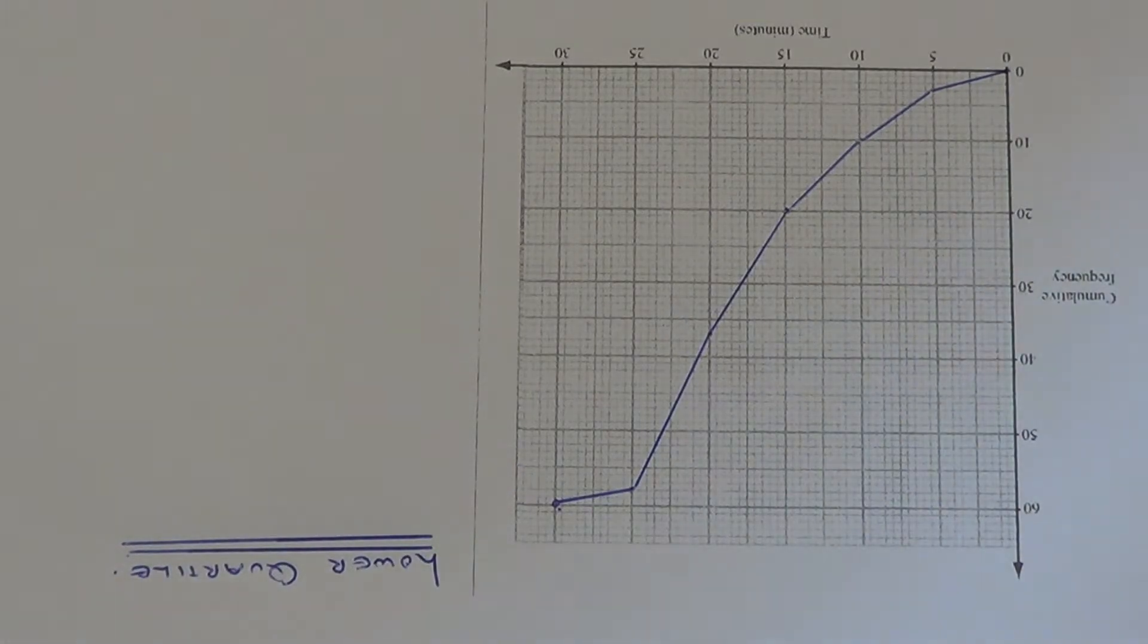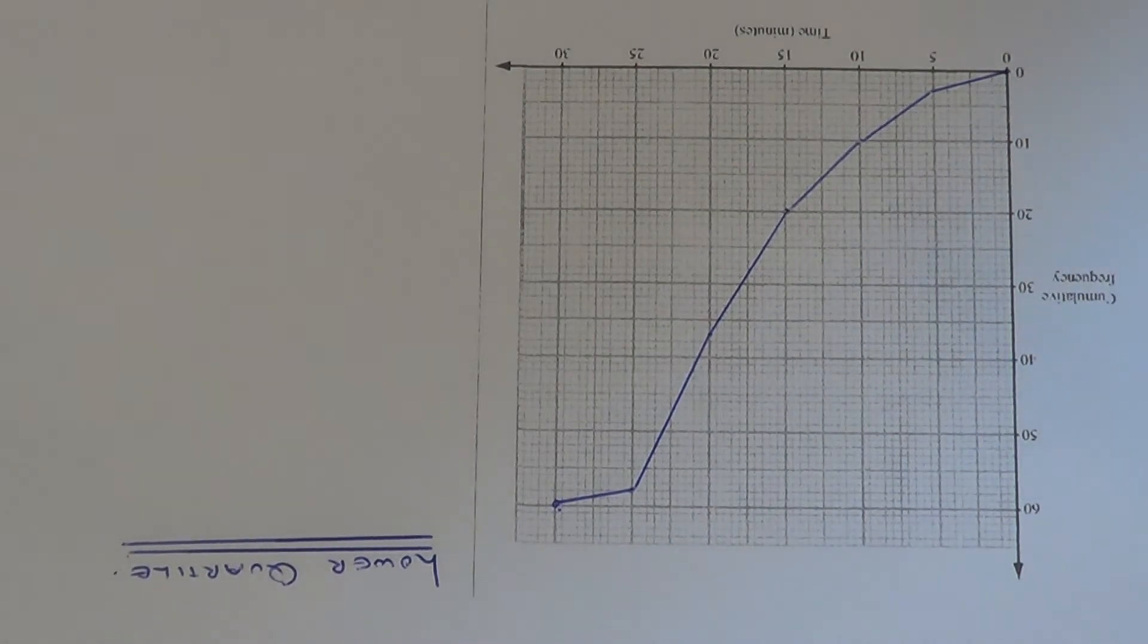Today I want to show you a quick example on how to work out the lower quartile from a cumulative frequency graph. In this example here, we've got the times it takes for a group of runners to complete a race.